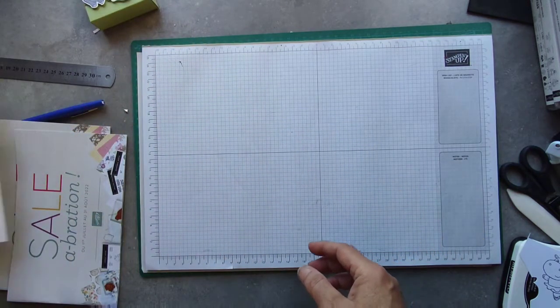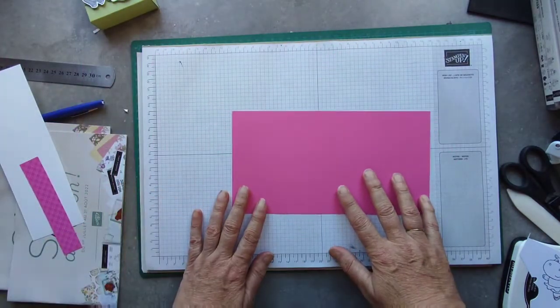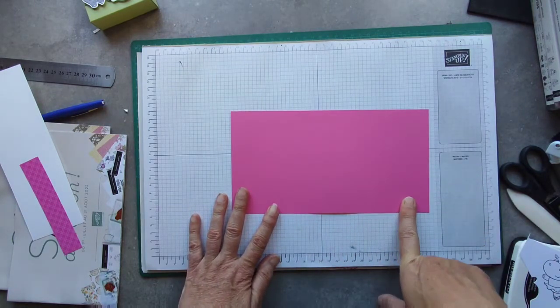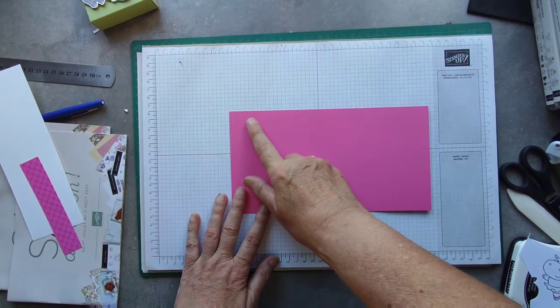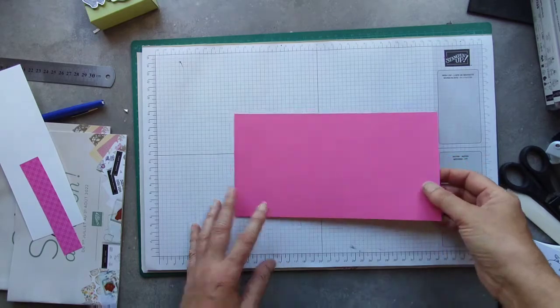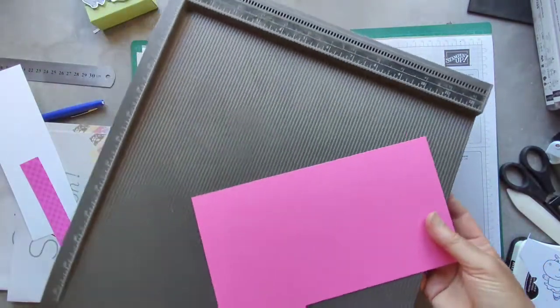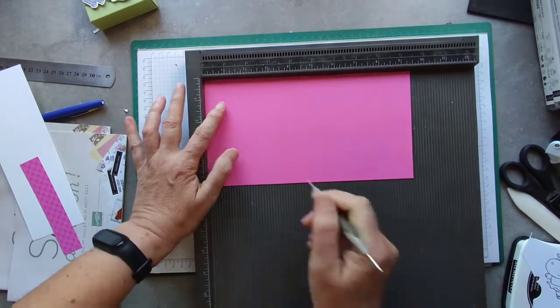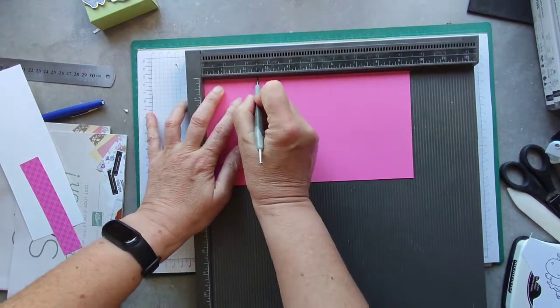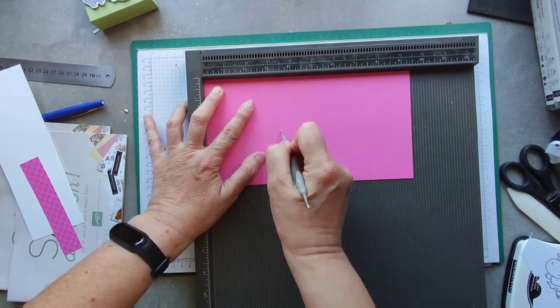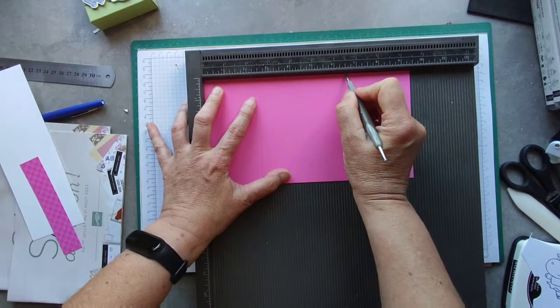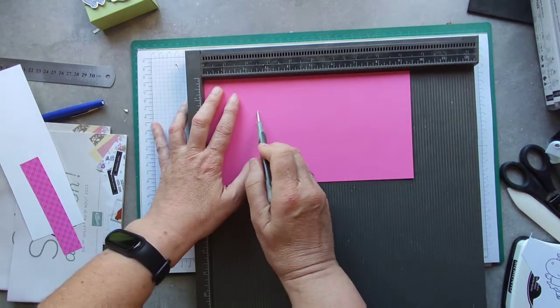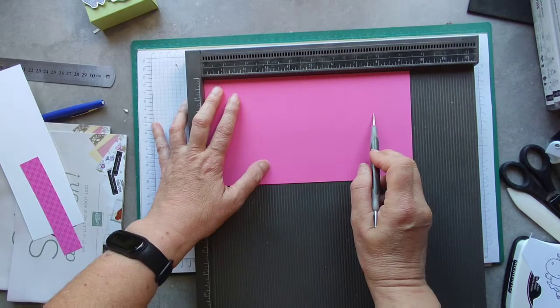You will need a piece of cardstock which measures 9.5 by 5 inches, which is 24 by 12.5 centimeters. On the long side, we are going to score at 2.5 centimeters, 3.5 centimeters, 6.5 by 7.5 inches, which is 16.5 by 19 centimeters.